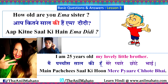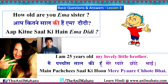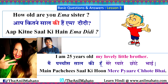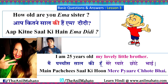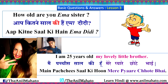Remember the phrase 'my lovely little brother.' 'Love' is 'pyaar,' and 'lovely' becomes 'pyaare' for a boy or 'pyaari' for a girl — so 'pyaari behen' means lovely sister. You can also say 'aap kitne saal ki hain, pyaari Emma didi' — lovely Emma sister.